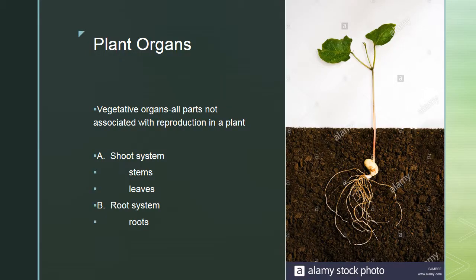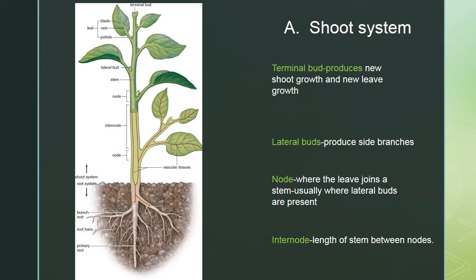We've looked at cells, meristems, and tissue systems. Now we'll do a brief overview of plant organs. Today we're focusing on the vegetative organs — parts not associated with reproduction. These are divided into the shoot system, which includes stems and leaves, and the root system.